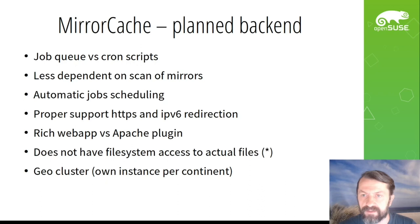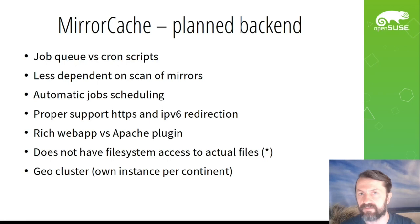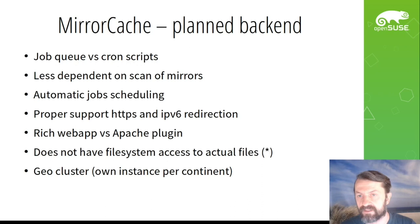This also makes MirrorCache less dependent on rescanning mirrors, because MirrorBrain currently scans huge locations over and over that are basically never updated — which is a waste of resources. With MirrorCache, it more reactively responds to what is going on on the frontend. If clients request unknown files that MirrorCache is not aware of, it will automatically schedule jobs that will discover and register those files.